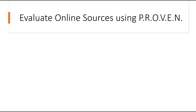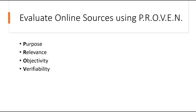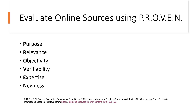In this video, you will learn how to use the PROVEN evaluation process to ensure that you select online sources that are authoritative. PROVEN stands for purpose, relevance, objectivity, verifiability, expertise, and newness.